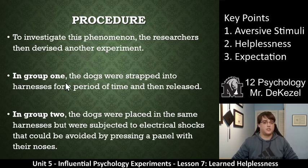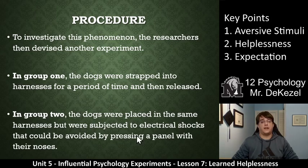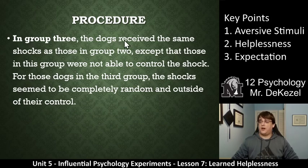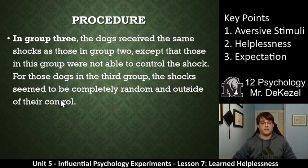To investigate this further, the researchers devised another experiment with three groups. In group 1 — essentially a control — dogs were strapped into a harness and then released with no shocks, nothing bad happened. In group 2, dogs were placed in the same harness and subjected to electrical shocks, but these shocks could be avoided by pressing a panel with their noses — they had the power to stop it. In group 3, the dogs received the same shocks as group 2, except they had no way to control or turn off the shock. The shocks seemed completely random and entirely out of their control — they were helpless.